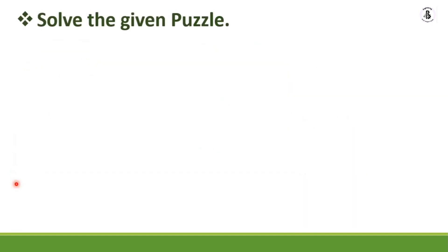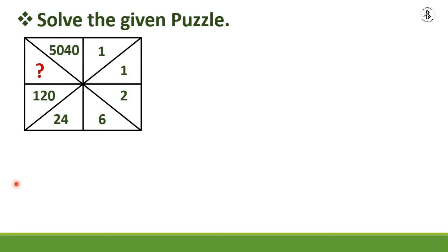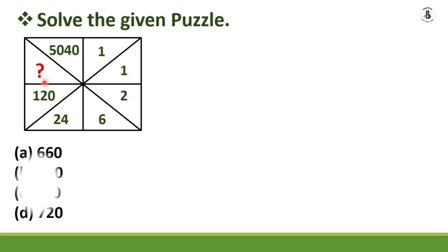The next problem is one of the typical problems to solve. Values are given in a square: 50, 40, 1, 1, 2, 6, 24, 120 — and you must find the question mark. The options are: A) 660, B) 680, C) 700, D) 720. I'll give 10 seconds to solve this.